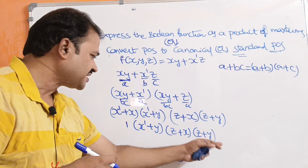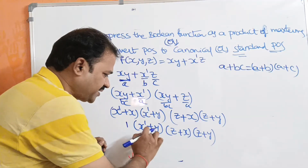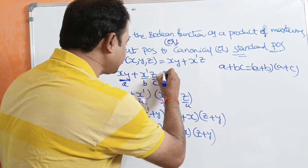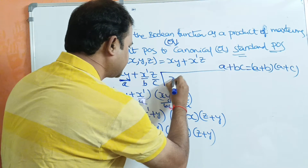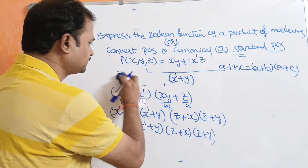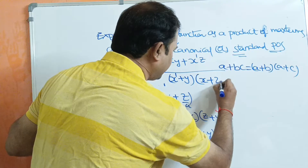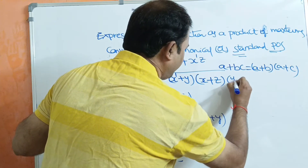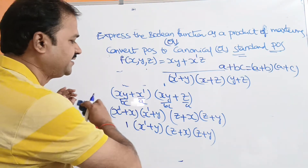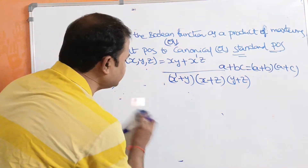If we consider this result, it is in the form of product of sum — we are performing a product operation on sums. So we can rewrite it as (x' + y)(x + z)(y + z). This is our POS form.